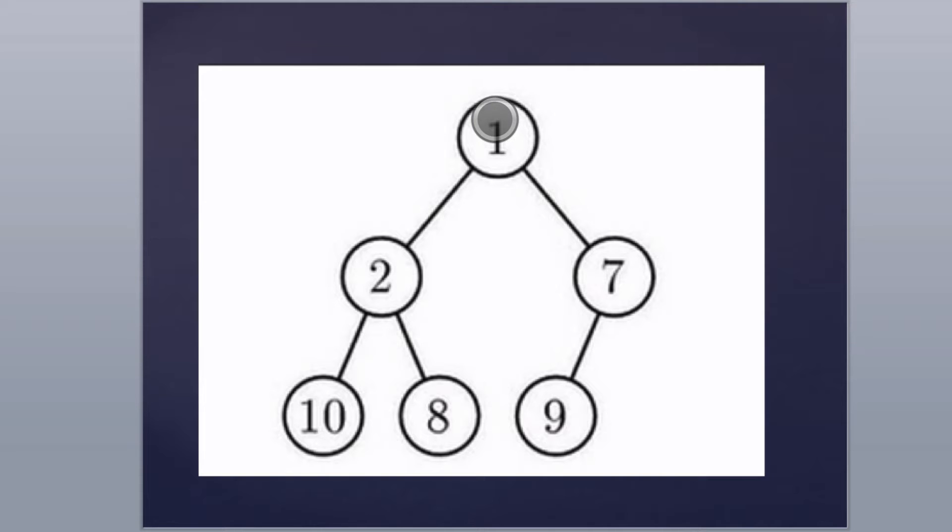By complete tree means every single row is filled, except for the last row. But the last row must have its nodes going from left to right. So for instance, all the nodes are filled here when you start at left and then the emptiness starts at the rightmost side. So that's a complete tree.